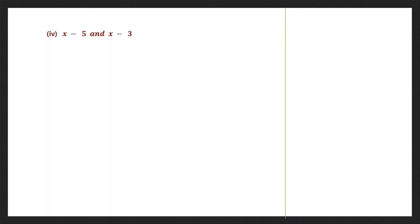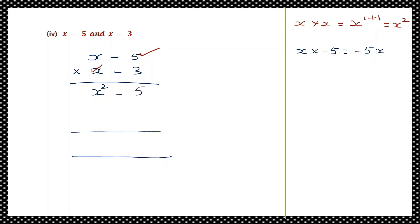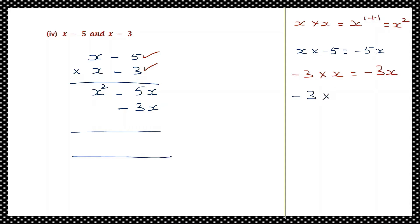Question 4: x minus 5 and x minus 3. First let's take x into x — that will be x squared. Now let's take x into minus 5, which will be minus 5x. Then minus 3 into x will be minus 3x. Now let's take minus 3 into minus 5: minus into minus is plus, and 3 fives are 15, so we get plus 15.